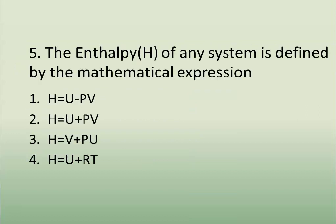Question number five: The enthalpy of any system is defined by the mathematical expression. Options are H = U − PV, H = U + PV, H = V + PU, or H = U + AC. And the correct answer is H = U + PV.